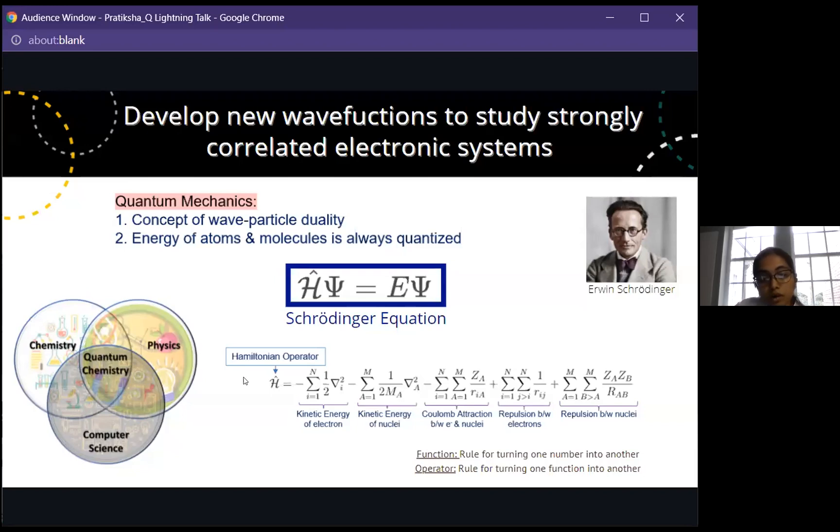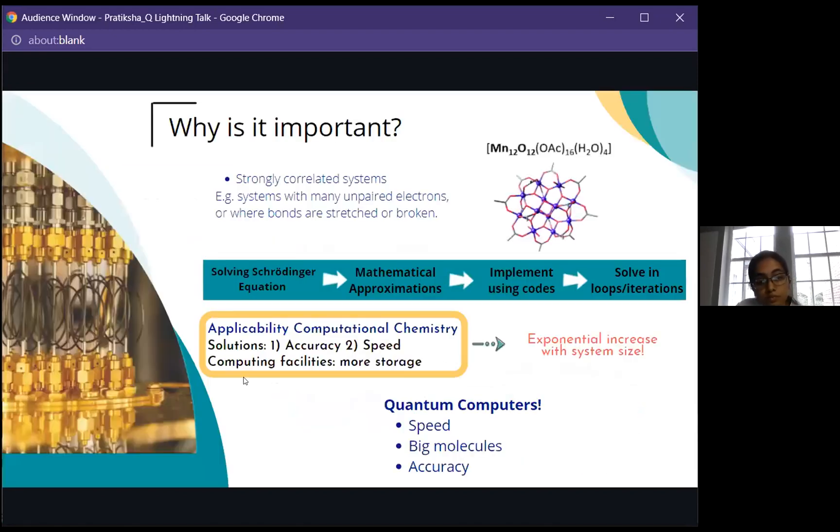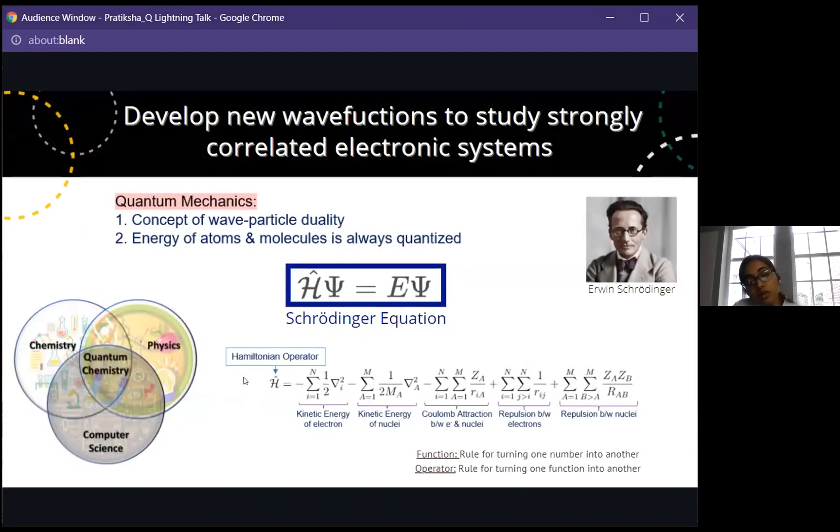What is an operator? Let's talk about function first. Function converts one number into another. For example square root is a function. If you input 25 as a number it will give you output as five. Similarly operators are the rule that turn one function into another. To solve the Schrödinger equation is a tough task because you can't capture the exact wave function since you can't distinguish between the electrons and you can't see them by your eyes. We need to implement several approximations for the wave functions and based on these assumptions many quantum chemical methods were developed.